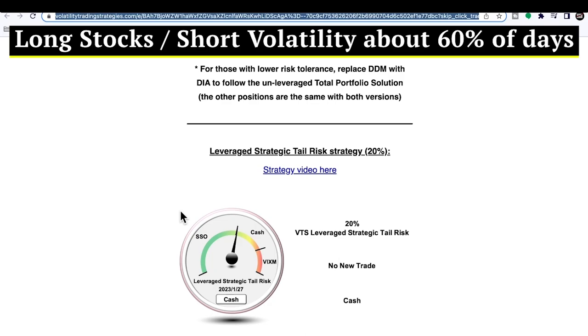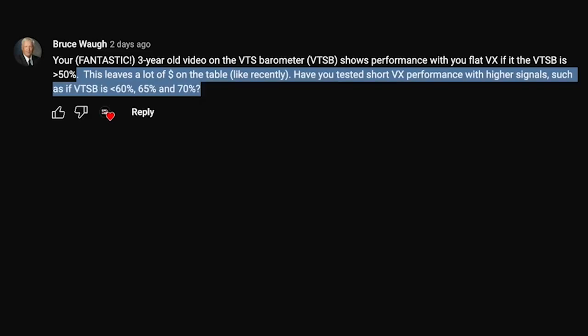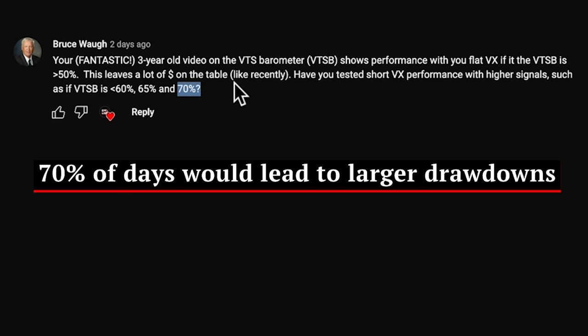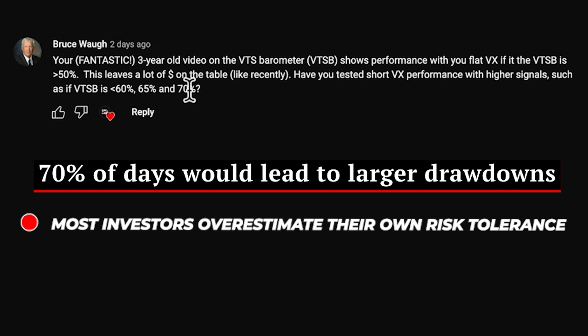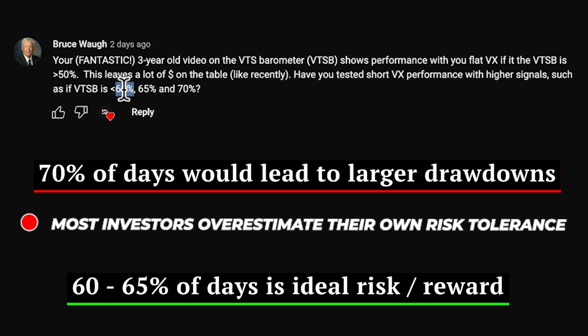If you go as high as 70, that's going to lead to pretty large drawdowns. The terminal result — meaning if you just traded it, came back 10 years later without experiencing the emotional roller coaster of drawdowns — would probably be even better at 70. But I don't think the average investor can sustain drawdowns much larger than about 30%; they tend to start looking for the exit. If you're short vol or long double equities 70% of the time, you're going to have some pretty excruciating drawdowns. Even though the terminal results might be a little lower, 60 is probably a much more practical number — it allows the most investors to stay the course. You don't want drawdowns getting into the 35–40% range; most people will pull the plug.